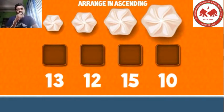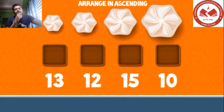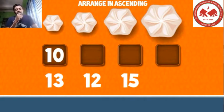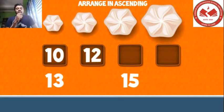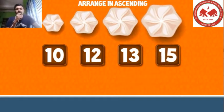Let's see another one. Here we have got 3 two-digit numbers. This is called arrangement of numbers from smaller to greater: 10, 12, 13, 15.